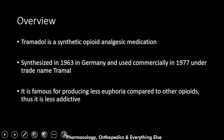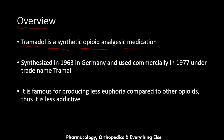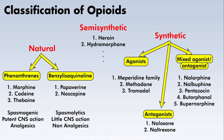Tramadol is a synthetic opioid analgesic medication. It was synthesized in 1963 in Germany and used commercially in 1977 under the trade name Tramadol. Tramadol is famous for producing less euphoria compared to other opioid agonists, and that is why it is much less addictive than other opioids.